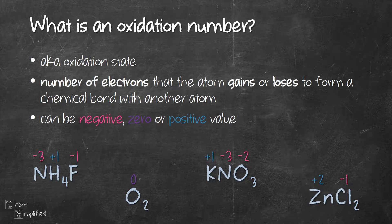Before we get started with calculating oxidation number, it'll be helpful to know what exactly is an oxidation number. It's basically a number that can be negative, zero, or positive. It tells us how many electrons an atom will gain or lose in order to form a chemical bond with another atom.